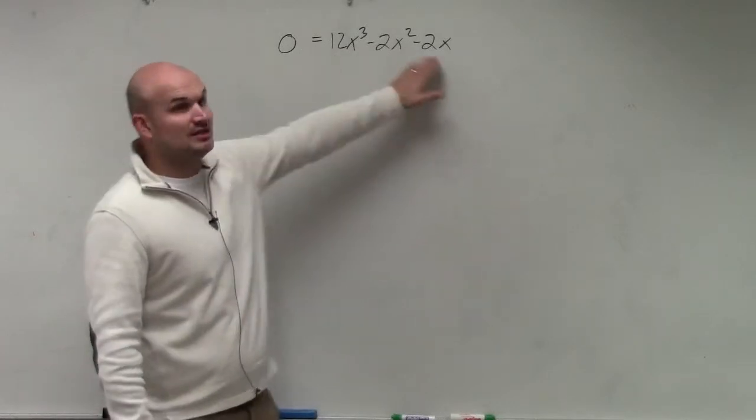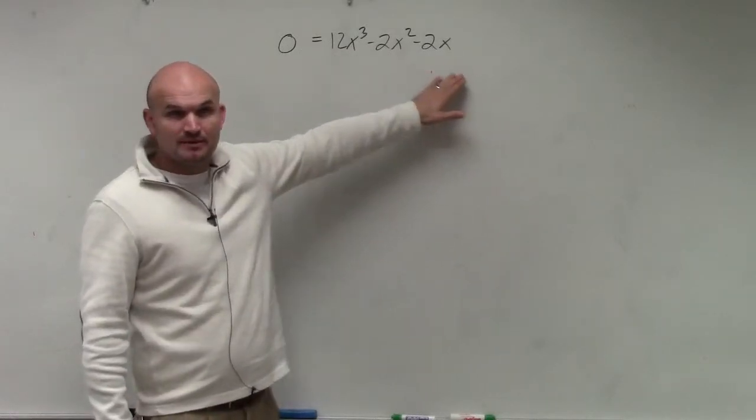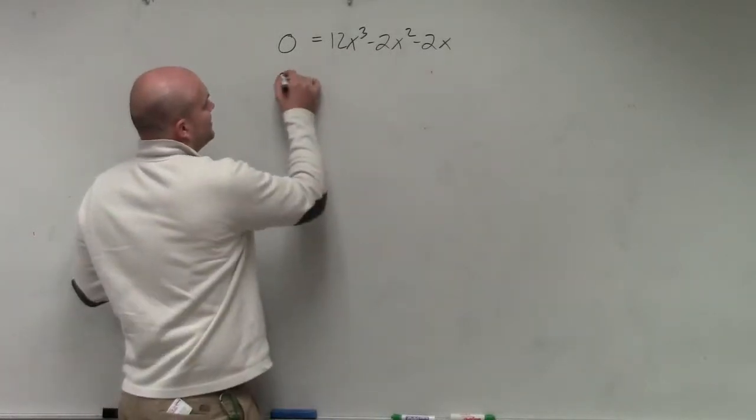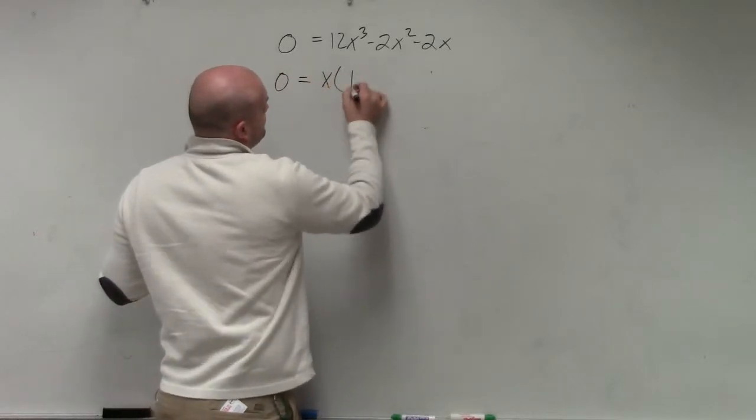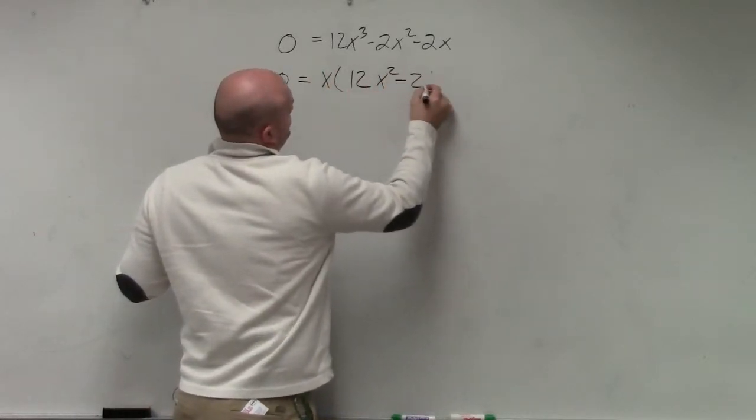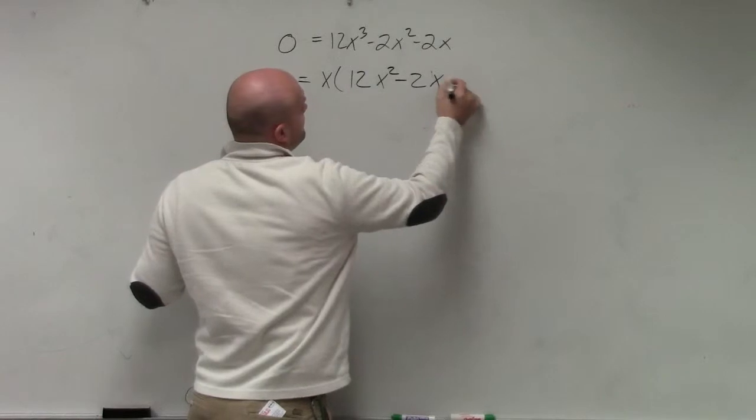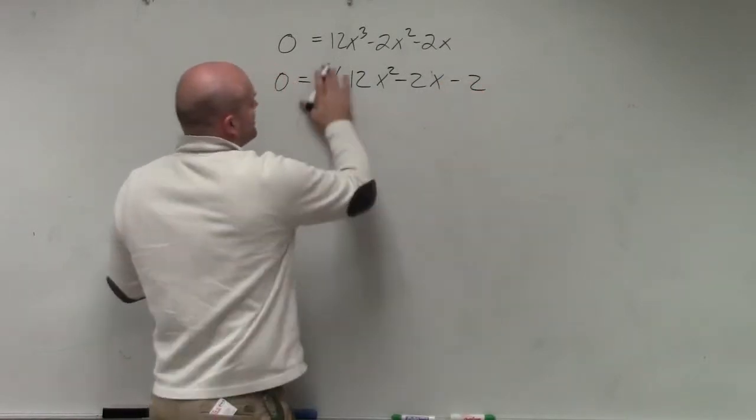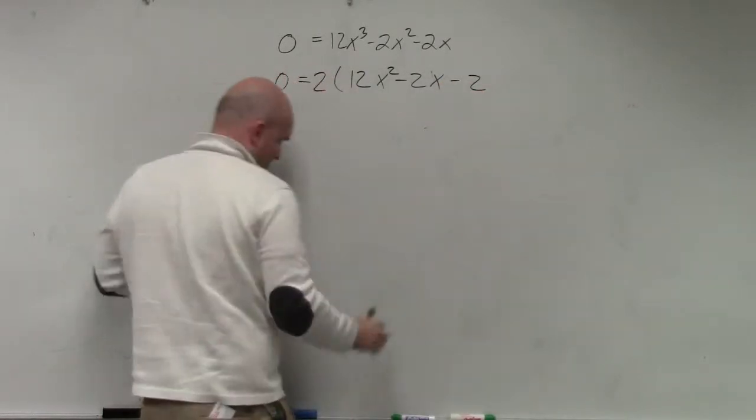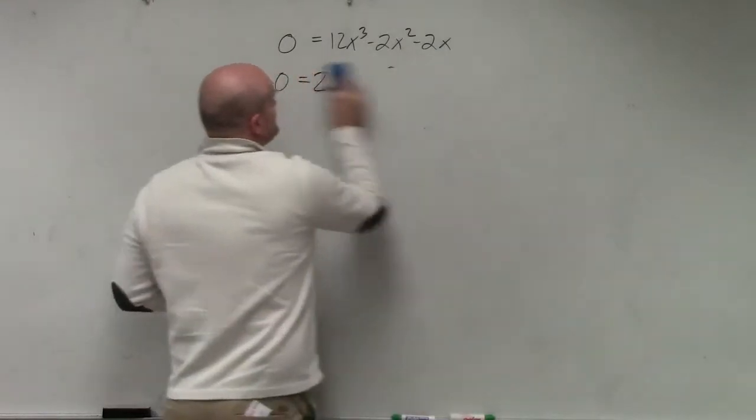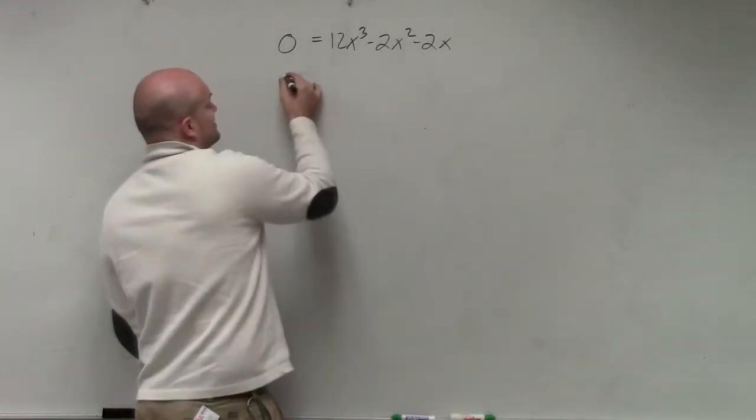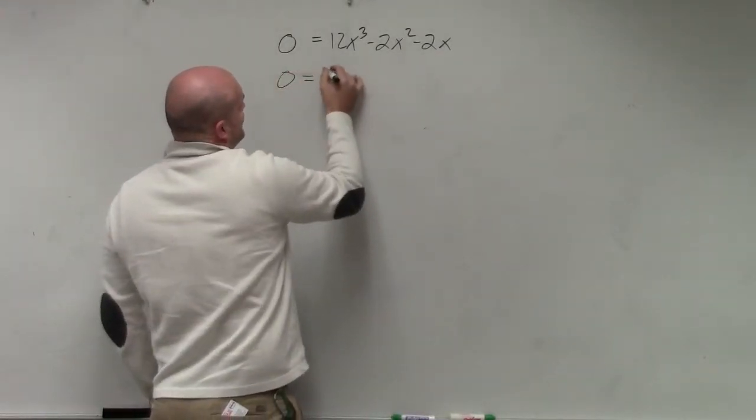First, I know I can factor out at least a common factor, right? So that's the first thing I'm going to do. I'm going to factor out a common factor. Actually, I'm sorry. I can factor out a 2x, right? So my common factor here is a 2x. So in factoring out a 2x,